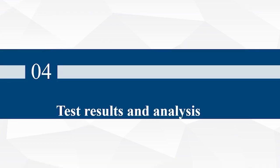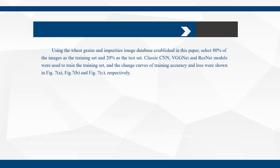The fourth part, test results and analysis. Using the wheat grains and impurities image database established in this paper, select 80% of the images as the training set and 20% as the test set. Classic CNN, VGGNet and ResNet models were used to train the training set and the change curves of training accuracy and loss were shown in Figure 7ABC.